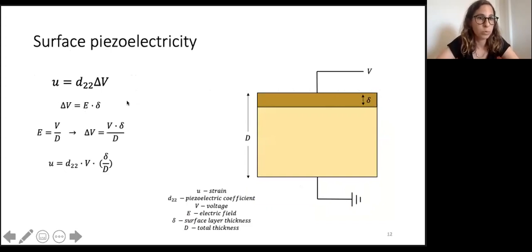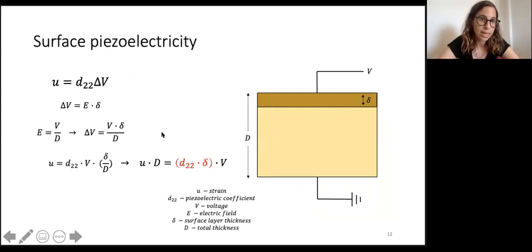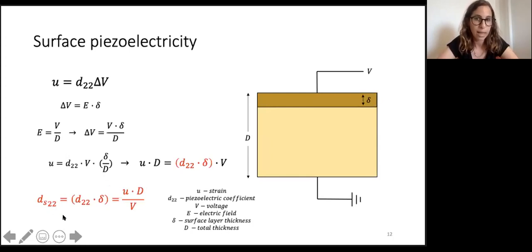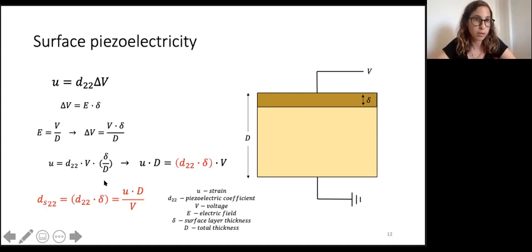Going back to the piezoelectric equation, by rearranging the parameters I can define what I call the effective piezoelectric coefficient d_eff. I call it effective because it is not the pure d_22 but a parameter composed only of known or measurable quantities: the displacement u (what we measure), d (crystal thickness, known), and V (the applied voltage). By applying voltage V and measuring displacement u we can calculate d_eff. To obtain the exact d_22 we must divide by delta, the surface layer thickness.